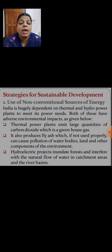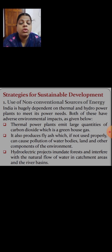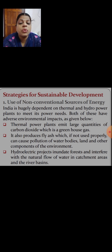Thermal power plants emit large quantities of carbon dioxide, which is a greenhouse gas. As I explained earlier in the context of global warming, carbon dioxide emissions have serious repercussions on the environment. Thermal plants also produce fly ash, which if not used properly can cause pollution of water bodies, land, and other components of the environment.